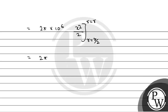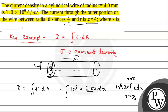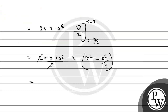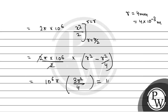Evaluating, we get 2π × 10⁶ / 2 × (r² − r²/4), which simplifies to 10⁶ × π × (3r²/4). Now r = 4 mm = 4 × 10⁻³ meter. Substituting, that becomes 10⁶ × 3 × 16 × 10⁻⁶ / 4 × π.